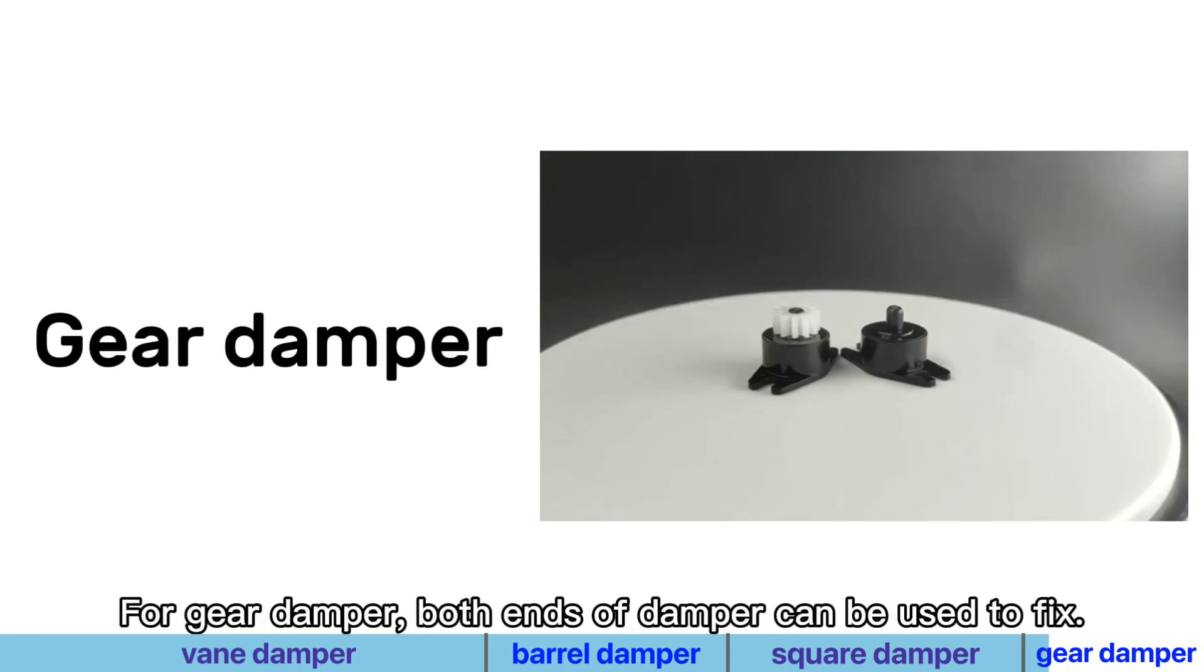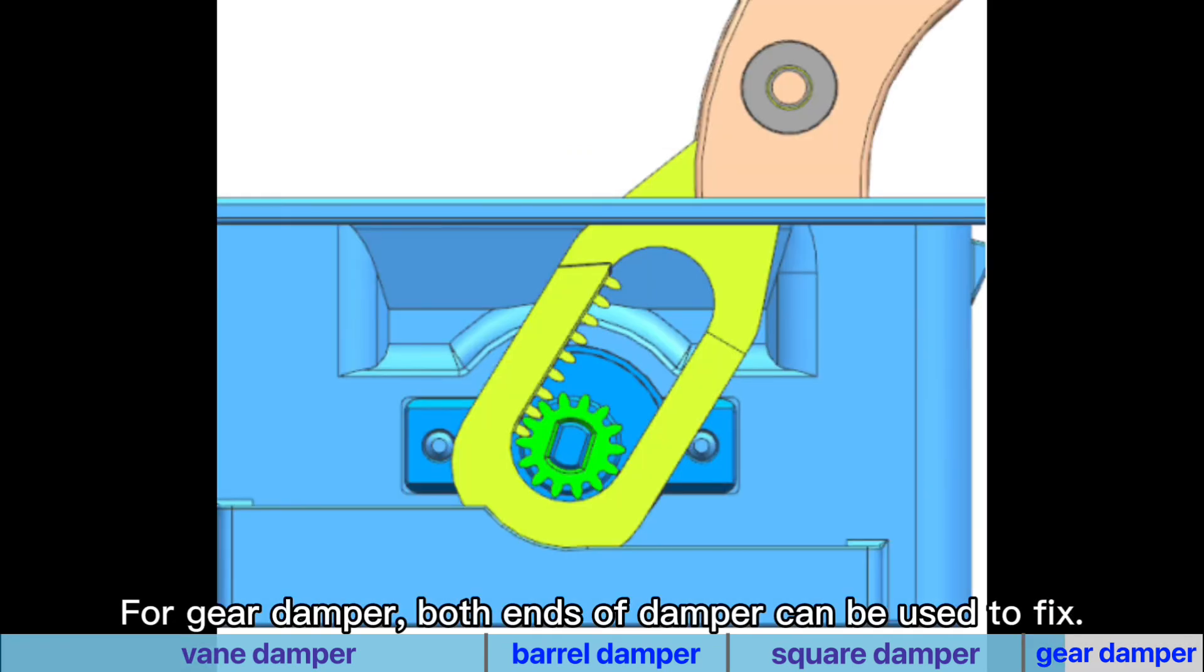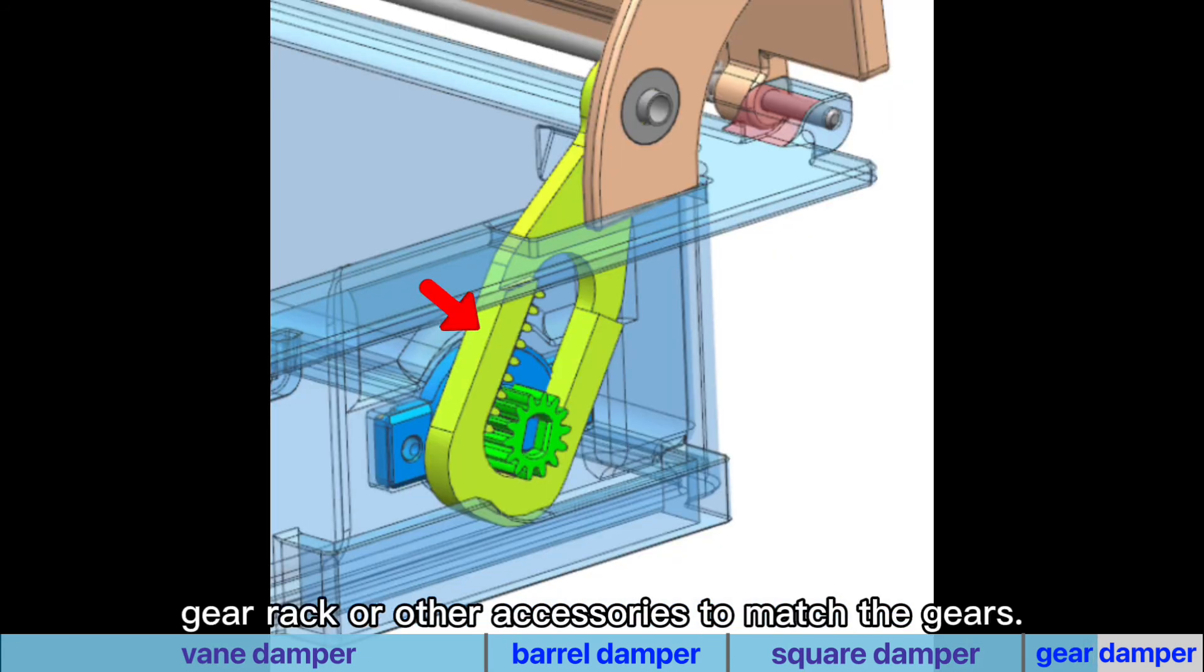For gear damper, both ends of the damper can be used to fix. Normally, we need to design gear rug or other accessories to match the gears.